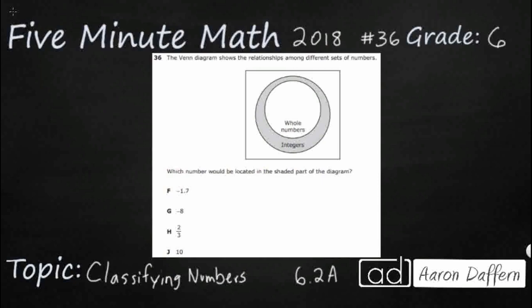So this looks like a very strange little Venn diagram here because we only have a box and then we have a circle within a circle and we're supposed to find the number that is located in the shaded part so we're really looking at the integer. So first let's define whole numbers and integers.